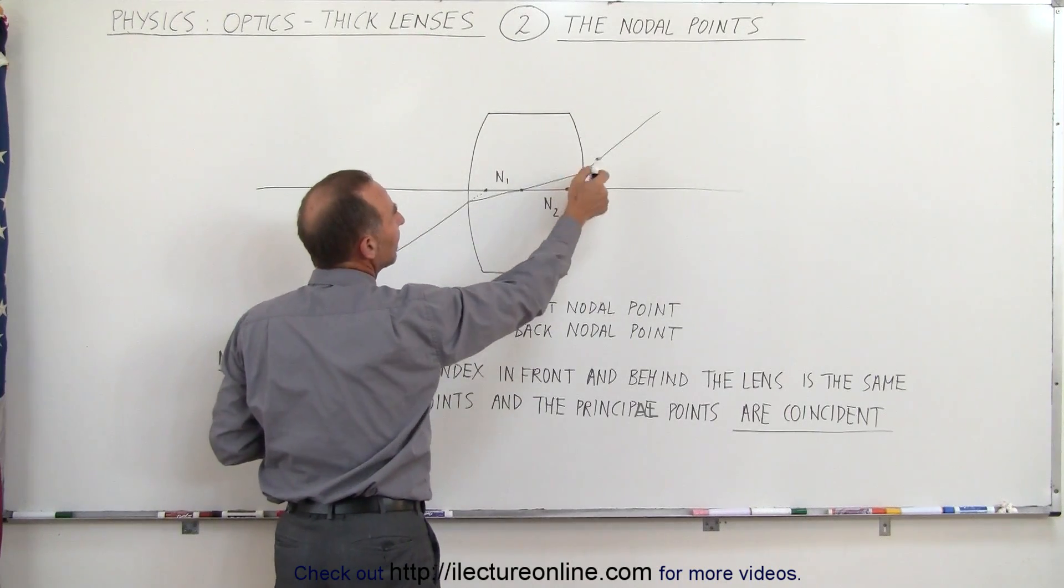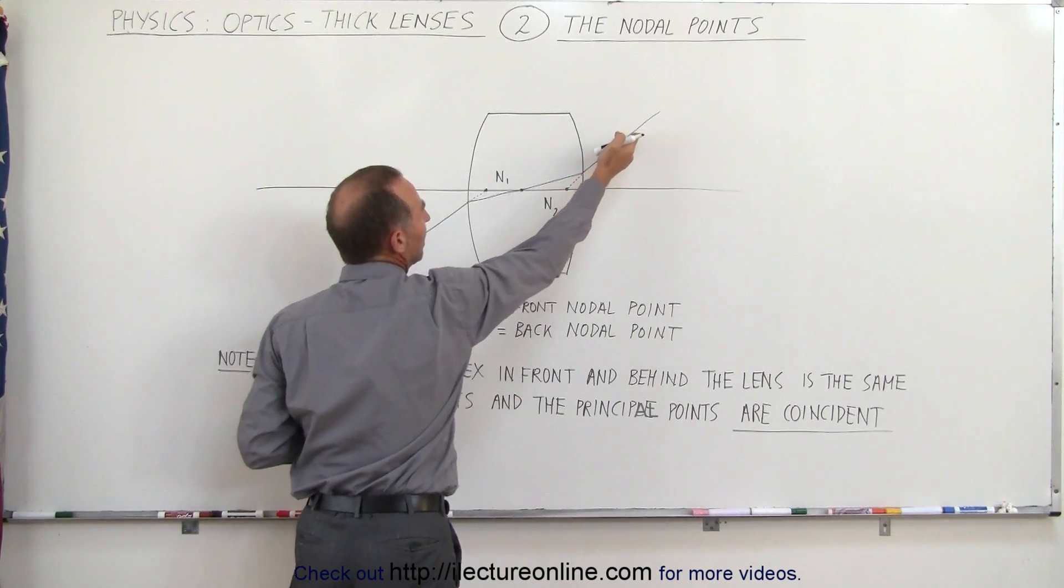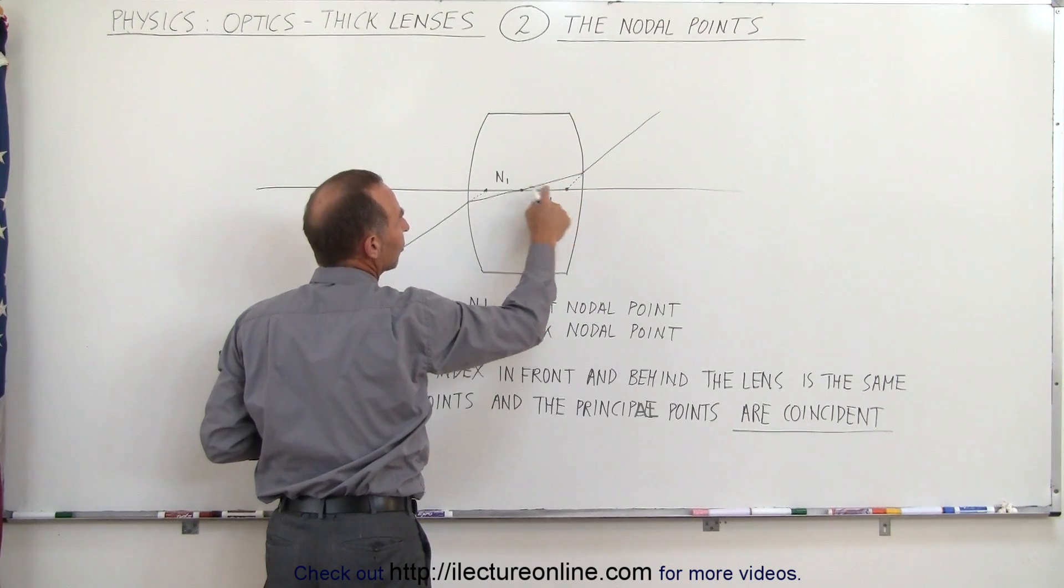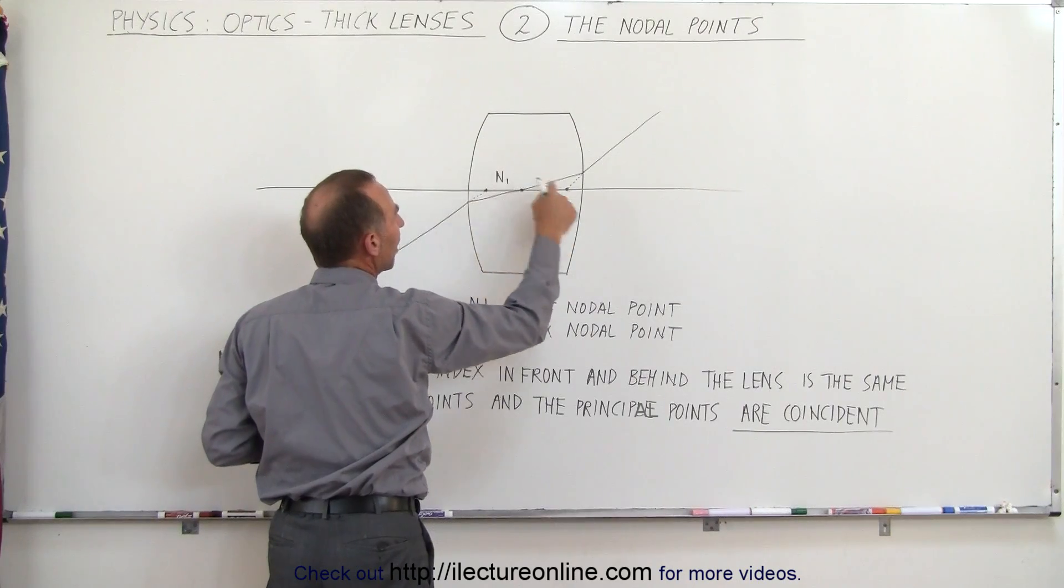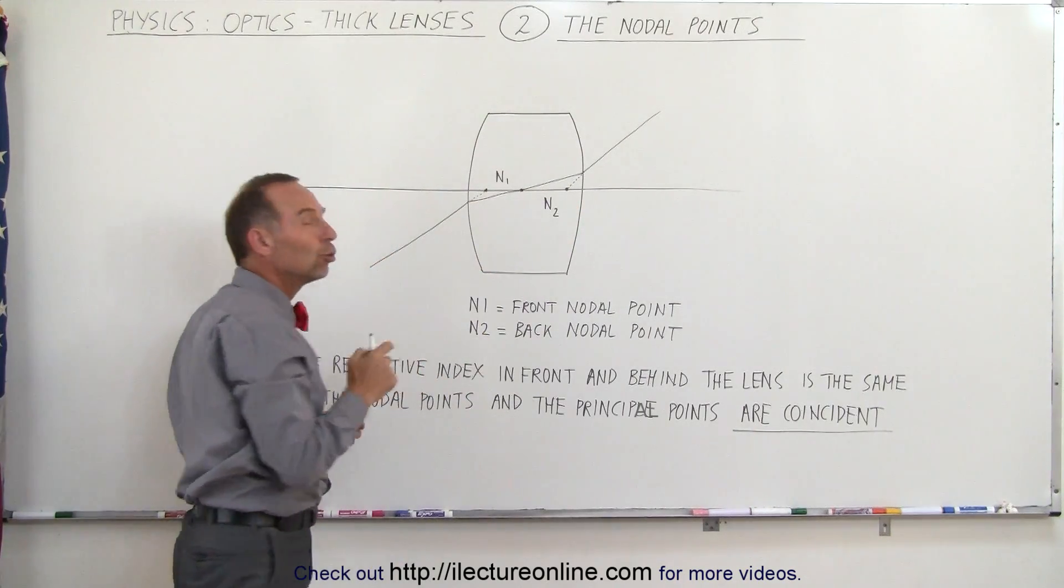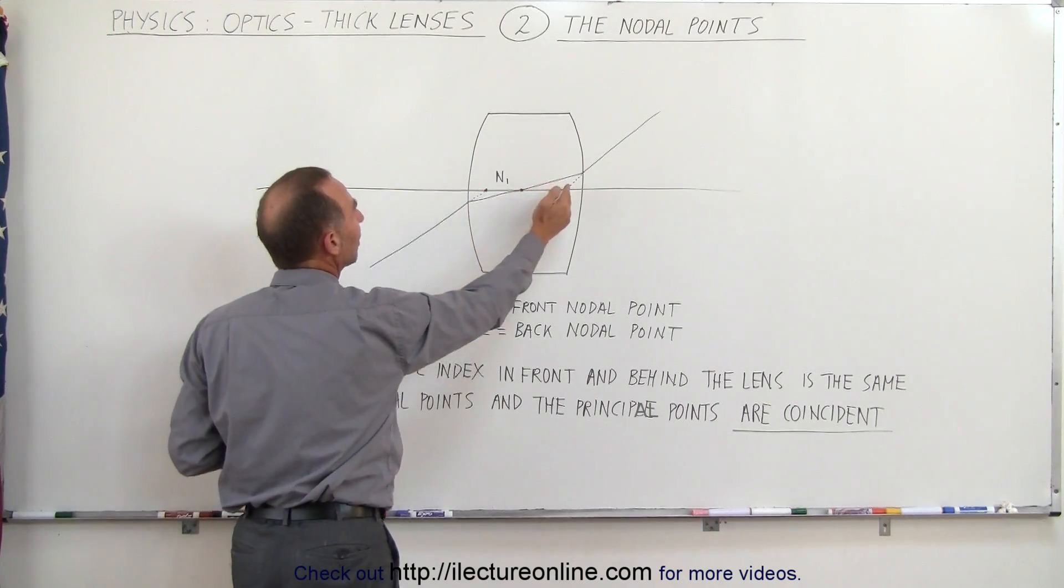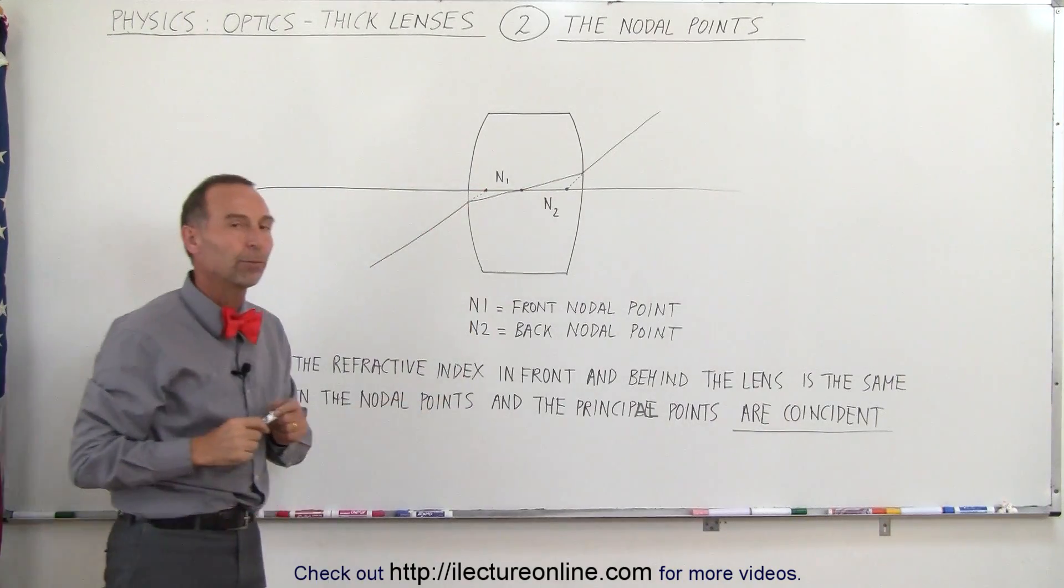Then notice again if we draw a straight line from this ray across the boundary without bending or refracting until we hit the optical axis, these two points where they hit the optical axis are called the nodal points. So we have N1, the front nodal point, and N2, the back nodal point.